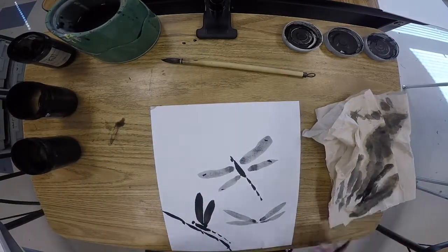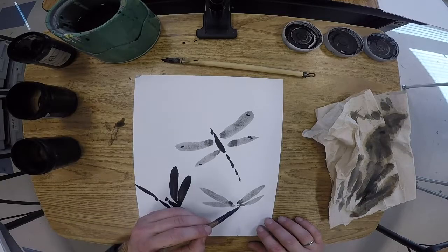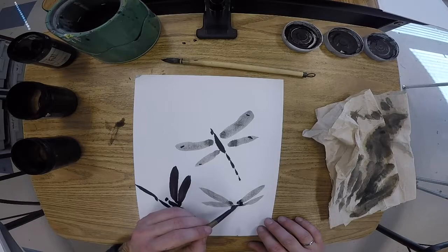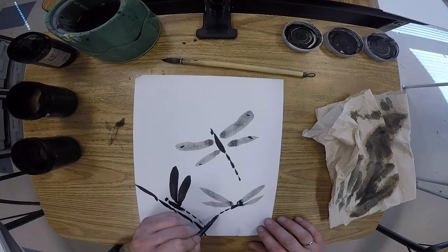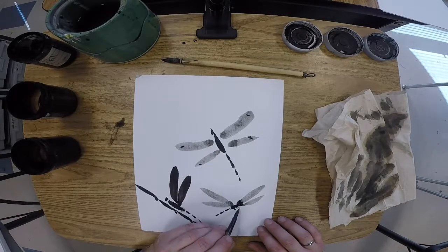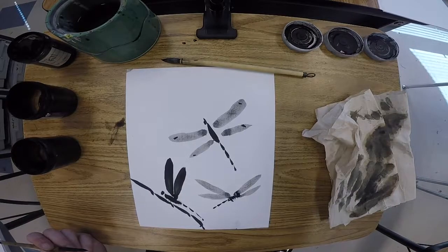Then we go back to our small fude, dip it into the full darkest ink, give our dragonfly a head, give him a body, and give him that nice tail. And there we have dragonflies in Sumi.